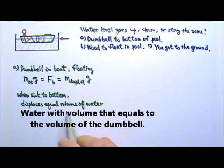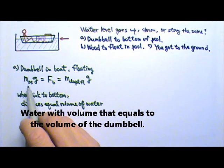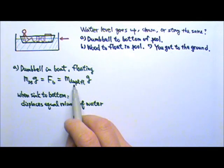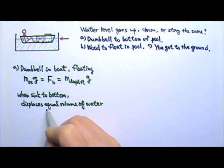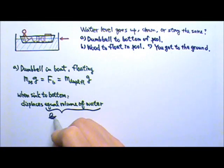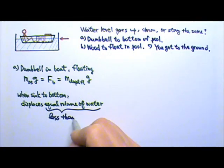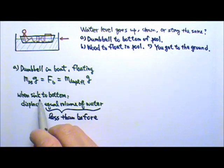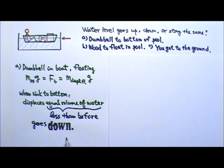And because the dumbbell, of course, is much denser than the water, when it sinks to the bottom, it displaces less water than before. Therefore, the water level goes down.